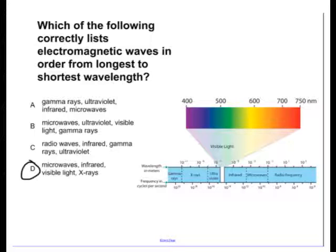Which of the following correctly lists electromagnetic waves in order from the longest to shortest wavelengths? Well, if you look at the diagram to the right, it lists all of the different wavelengths in order from smallest to largest.